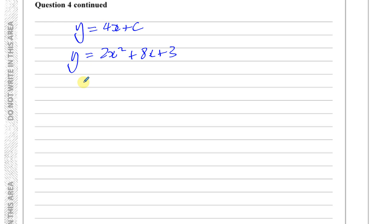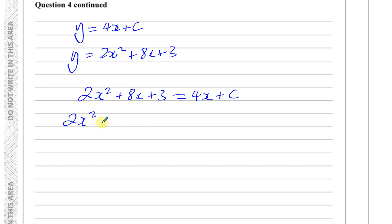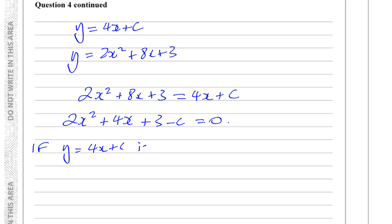Since both expressions equal y, we set them equal: 2x squared plus 8x plus 3 equals 4x plus c. Rearranging gives 2x squared plus 4x plus (3 minus c) equals 0. Because y equals 4x plus c is a tangent, this quadratic equation must have exactly one solution.